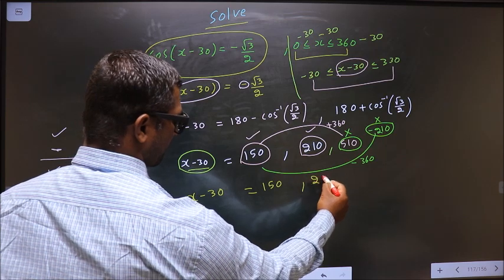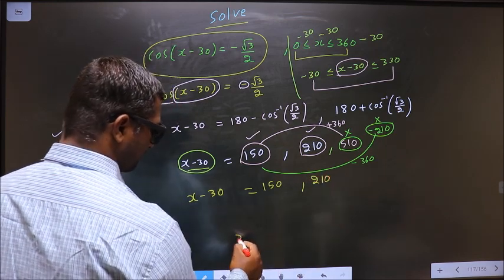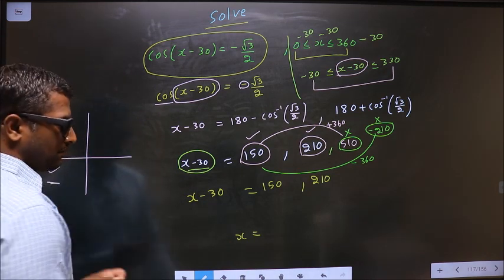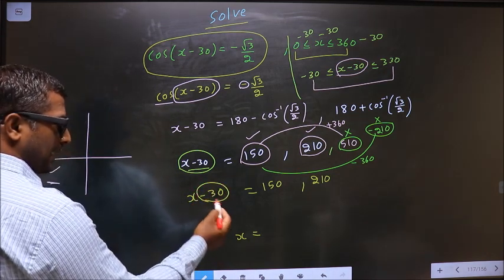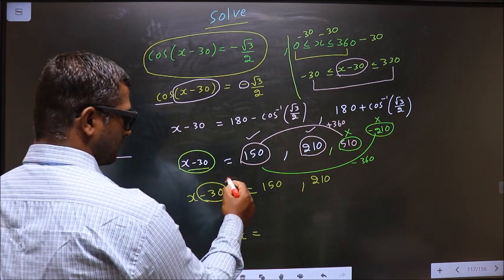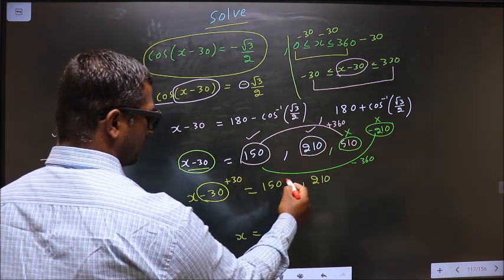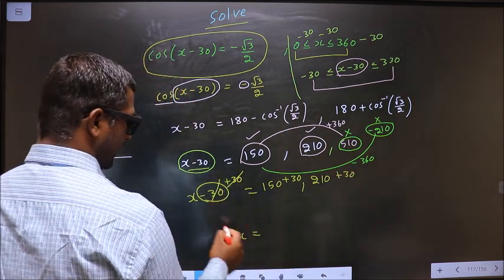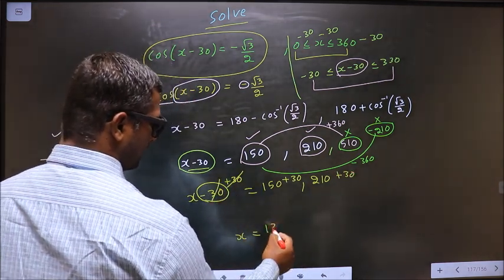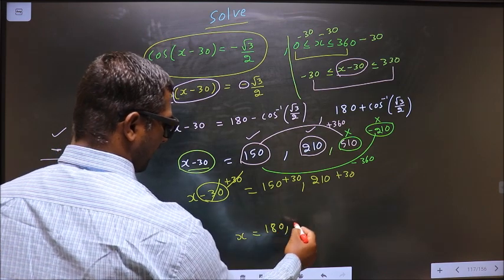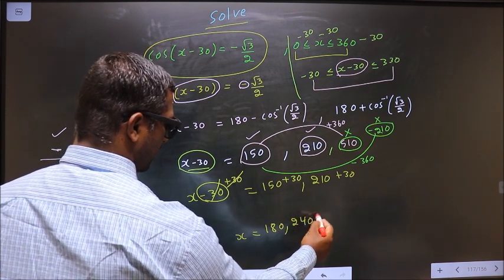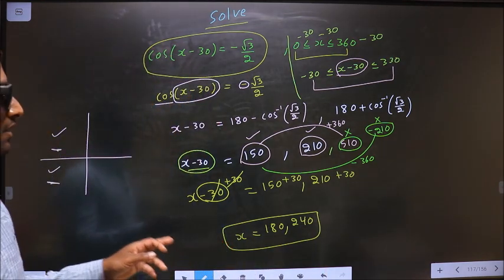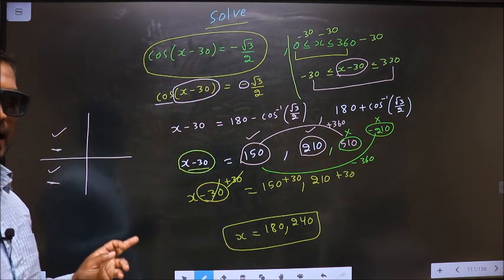Now we should get the values for x. For that I should remove this minus 30, so to remove minus 30 you add 30 everywhere. So I get x = 150 + 30 = 180, and this I get 240. This is our answer. Am I clear?